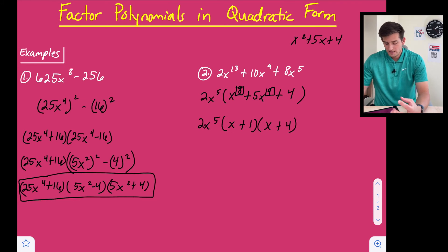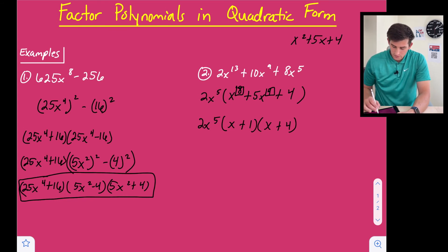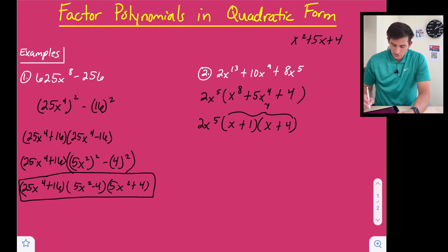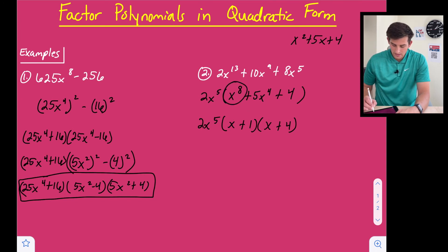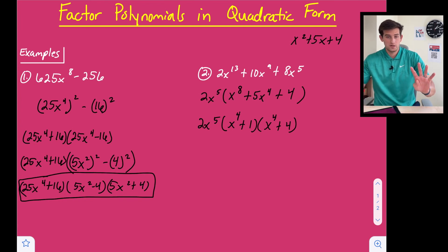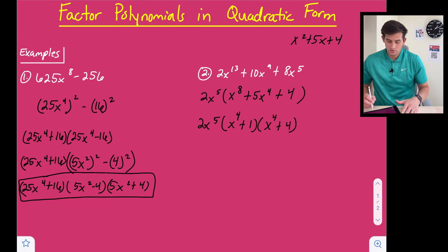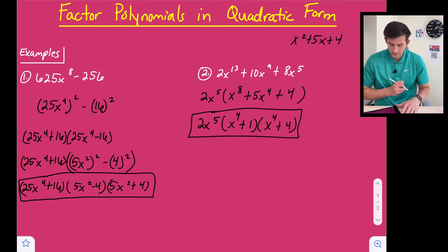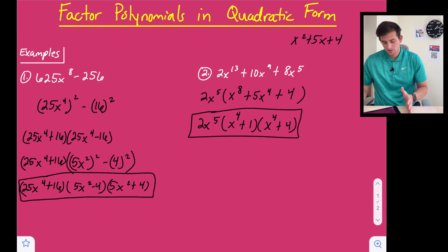But here we have x to the eighth and 5x to the fourth, so we need exponents on the x terms inside the factors. When we FOIL, we want x times x to give x to the eighth, so x to the fourth times x to the fourth works. Then x to the fourth times 4 plus 1 times x to the fourth gives us 5x to the fourth for the middle term, and 1 times 4 gives us 4. So the complete factorization is 2x to the fifth times (x to the fourth plus 1) times (x to the fourth plus 4).